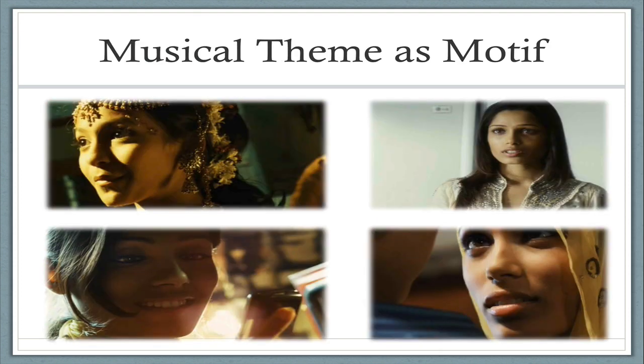The last type of motif is one you can only see in film or perhaps live theater: a musical theme as a motif. In Slumdog Millionaire, the love interest of the main character is a girl named Latika. Every time Latika is thought about, mentioned, or seen on screen, the same musical sound comes out on the soundtrack. In summary, motifs are recurring patterns in films and in literature.